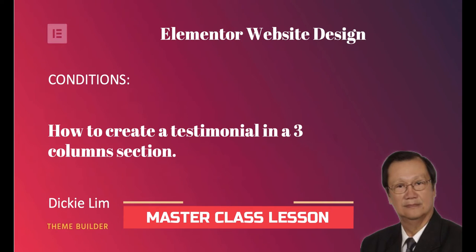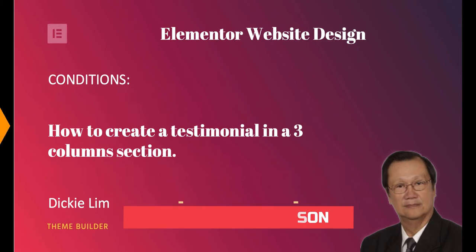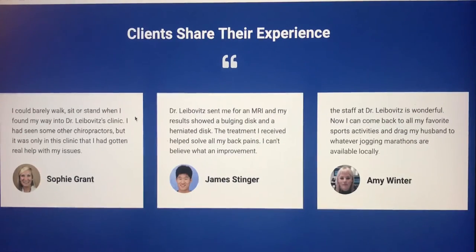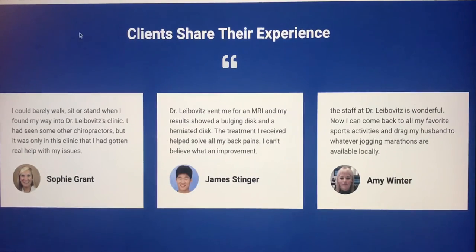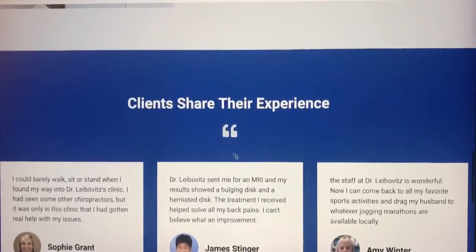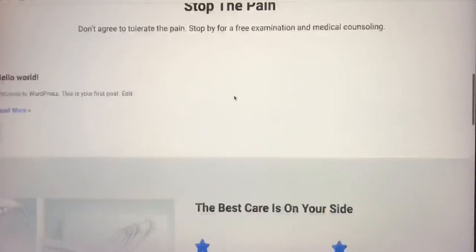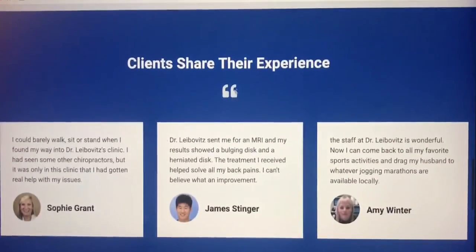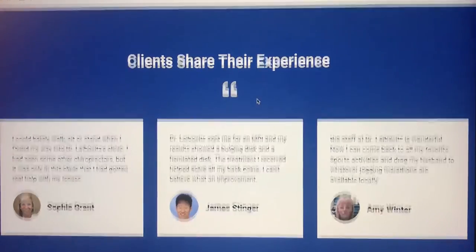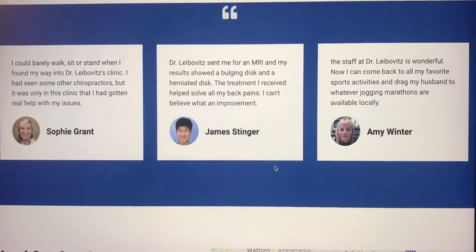Today's Masterclass lesson is about creating a testimonial section. The next section we will be doing is Section 4, and I think it's much easier than the last section. If you look at it, this is basically a testimonial. You have one row section, a second row section, three columns, and bottom and top there is a space. The layout is very simple: space, one row column, one row column, three column, and the space.